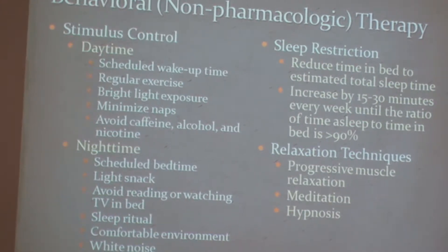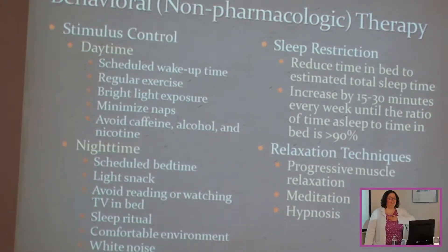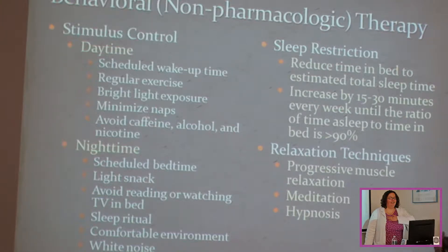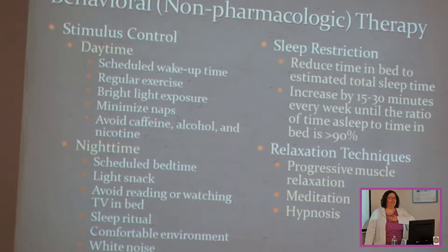You shouldn't exercise too close to bedtime because it gets you going and makes it hard to fall asleep, but during the day it's great. Bright light exposure is important. You want to minimize naps — because if you nap two hours here, another hour there, 30 minutes there, you'll be rested by 9 or 10 o'clock at night and won't want to sleep, repeating the cycle.